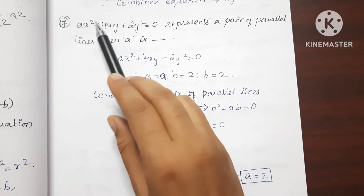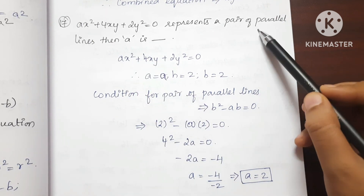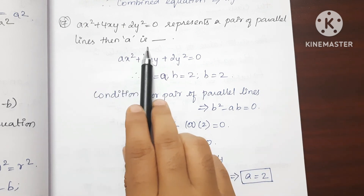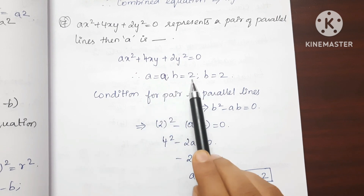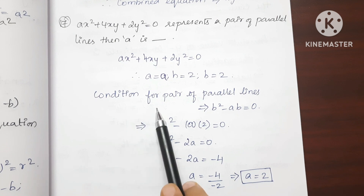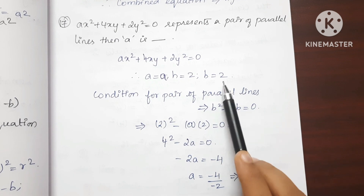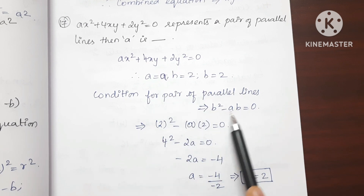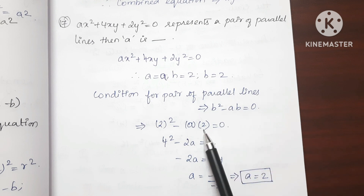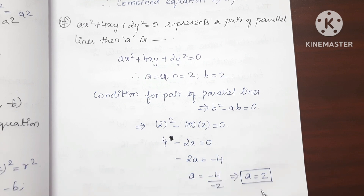Question 17: ax²+4xy+2y²=0 represents a pair of parallel lines. Find a. Here a=a, h=2, b=2. The condition for a pair of parallel lines is h²-ab=0. So 2²-a×2=0, giving 4-2a=0, thus -2a=-4 and a=2.